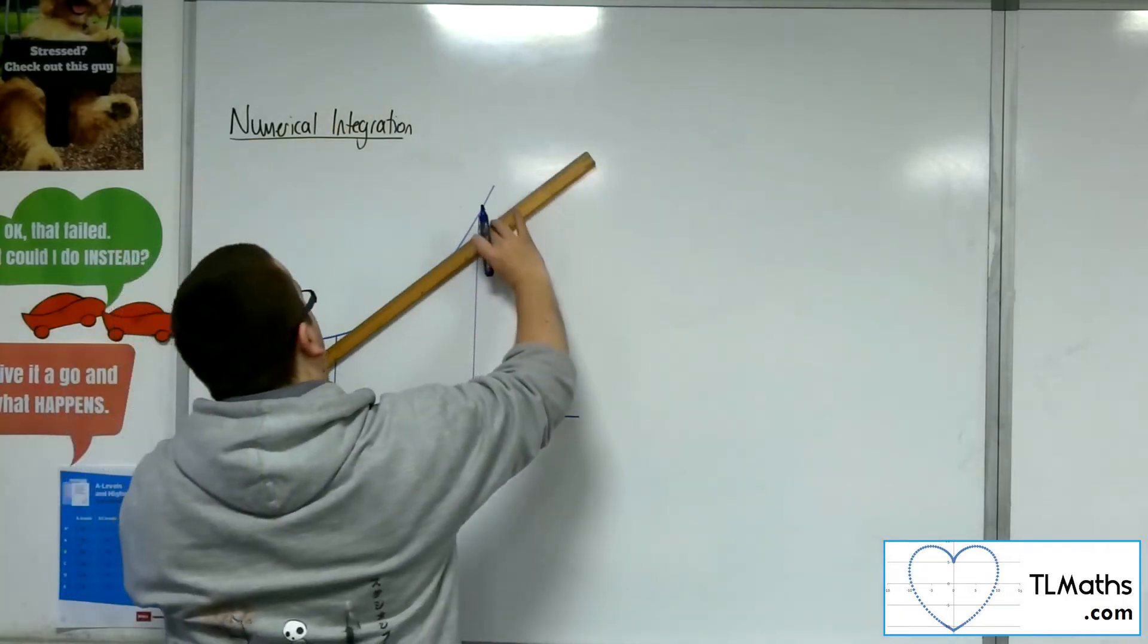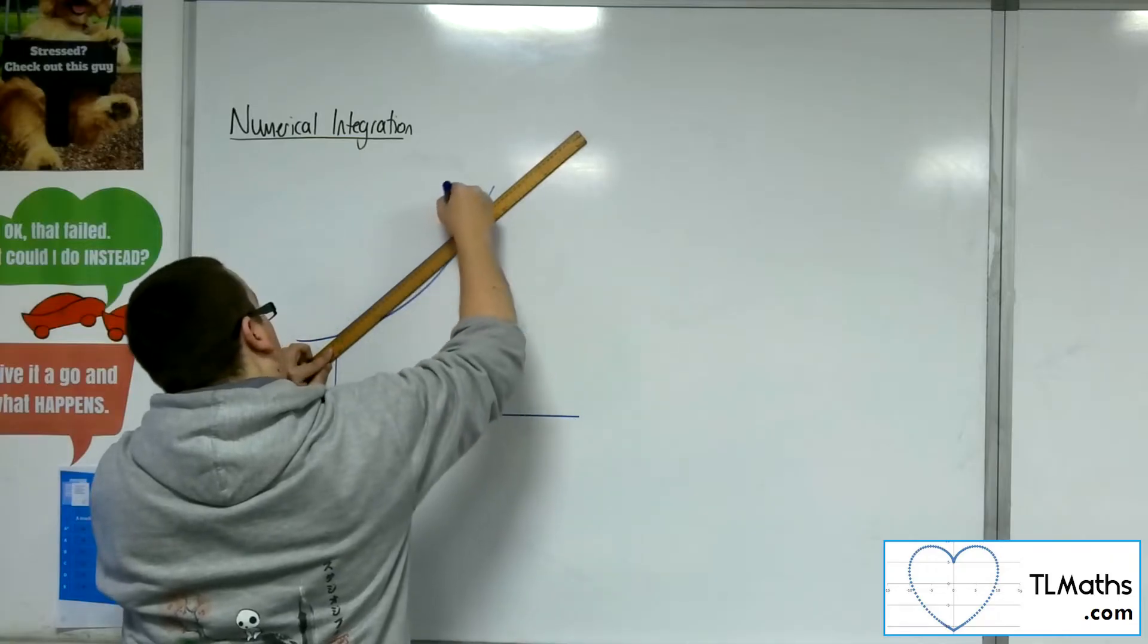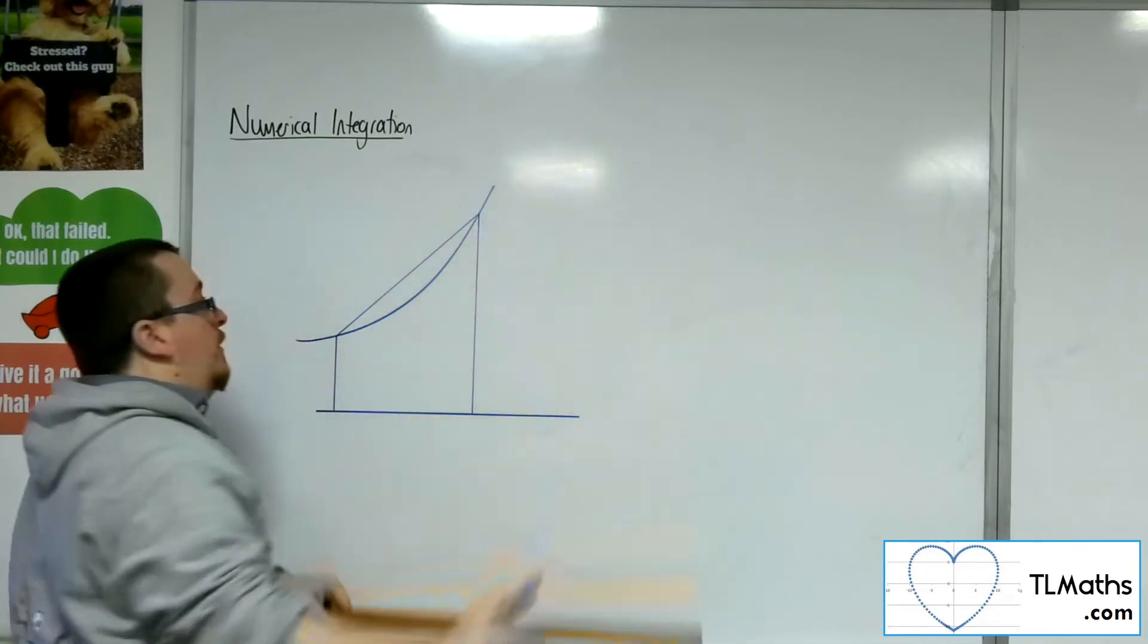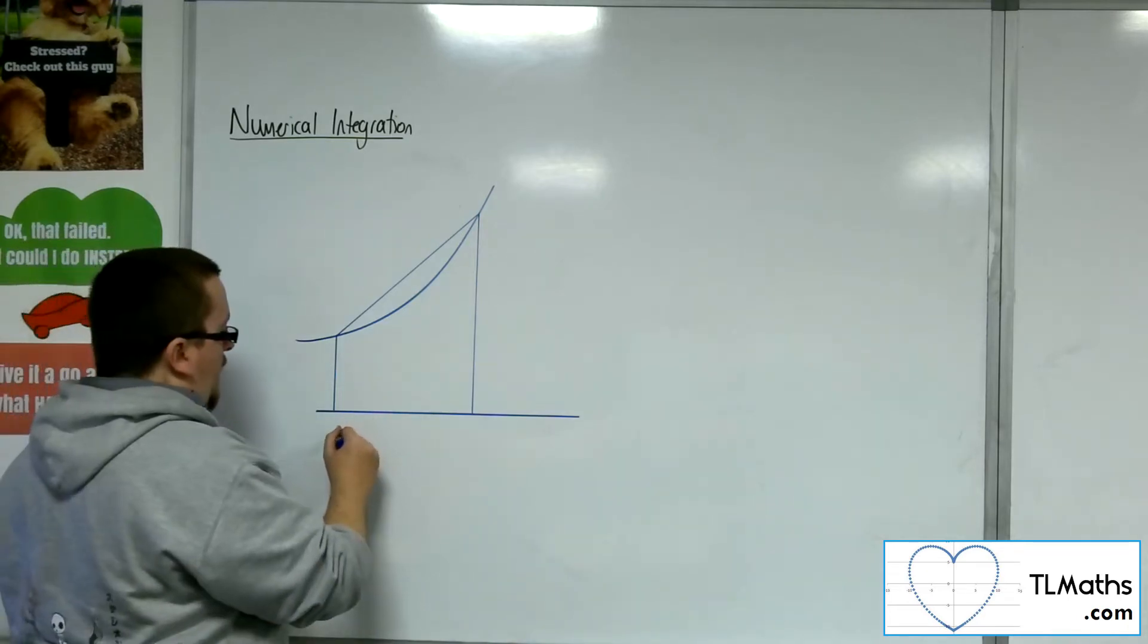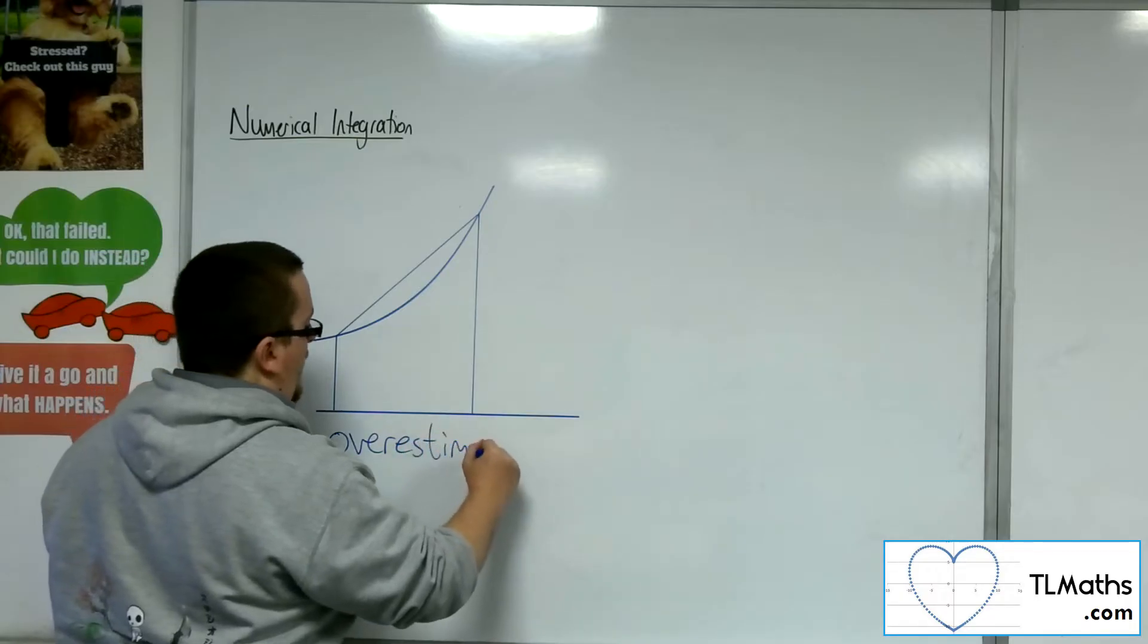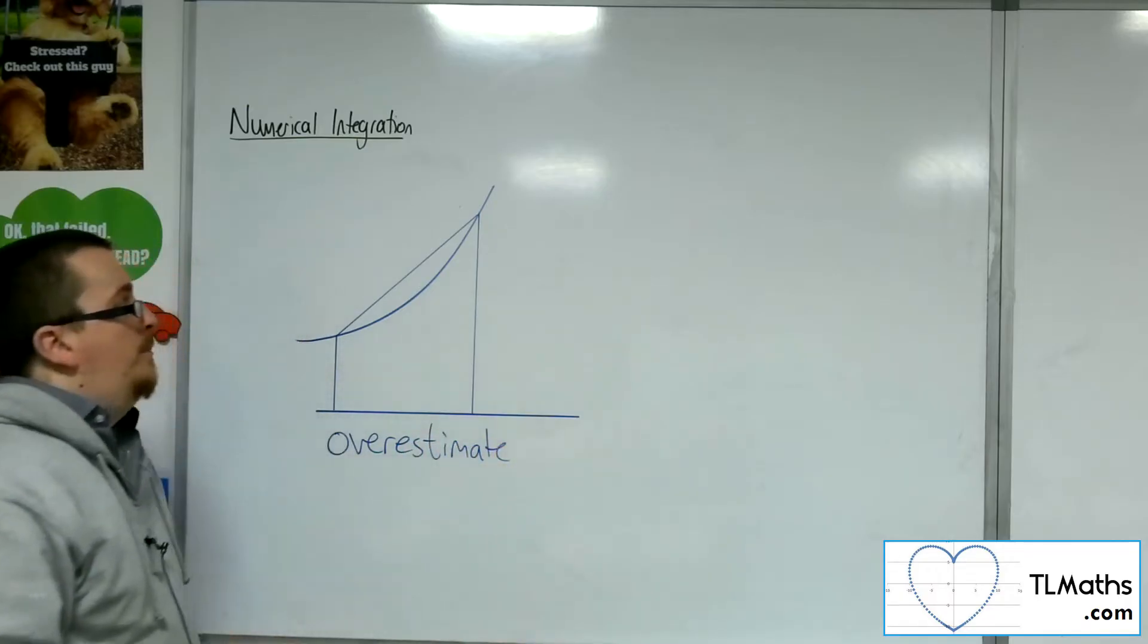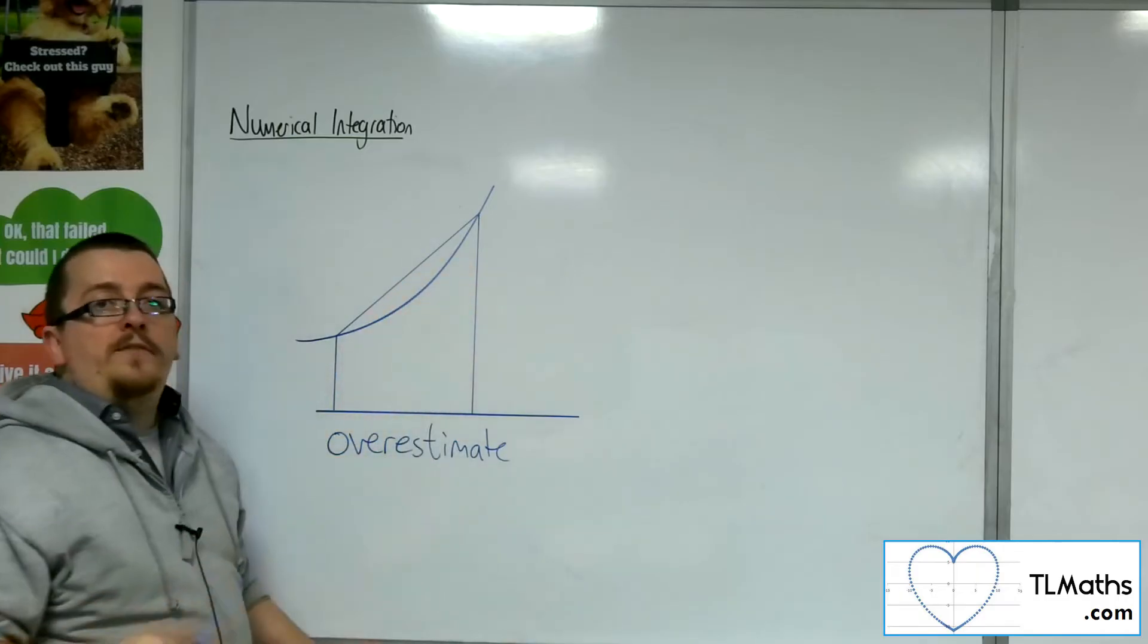you can see that the trapezium would clearly go over the top of the curve. And so you would have an overestimate. The area of your trapezium would clearly be larger than the area you're trying to find between the curve and the x-axis.